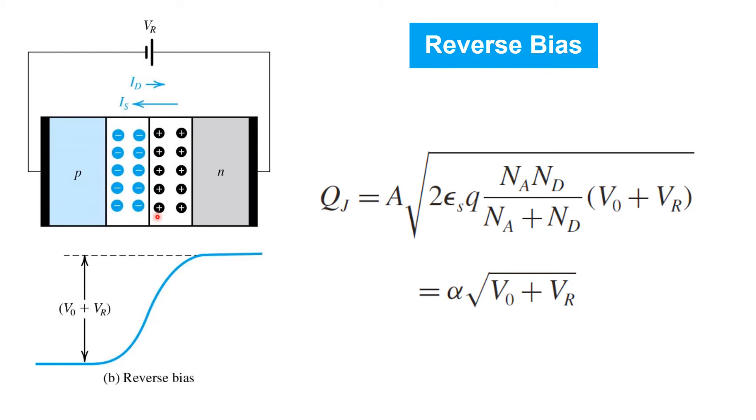Now since the density of charge on each side of the junction is determined by the dopant concentrations, and so is not changed when the reverse voltage is applied, the only way that we can get an increase in net positive and negative charge on each side of the junction is if the depletion region grows and extends further away from the P-N interface here as the reverse bias voltage increases.